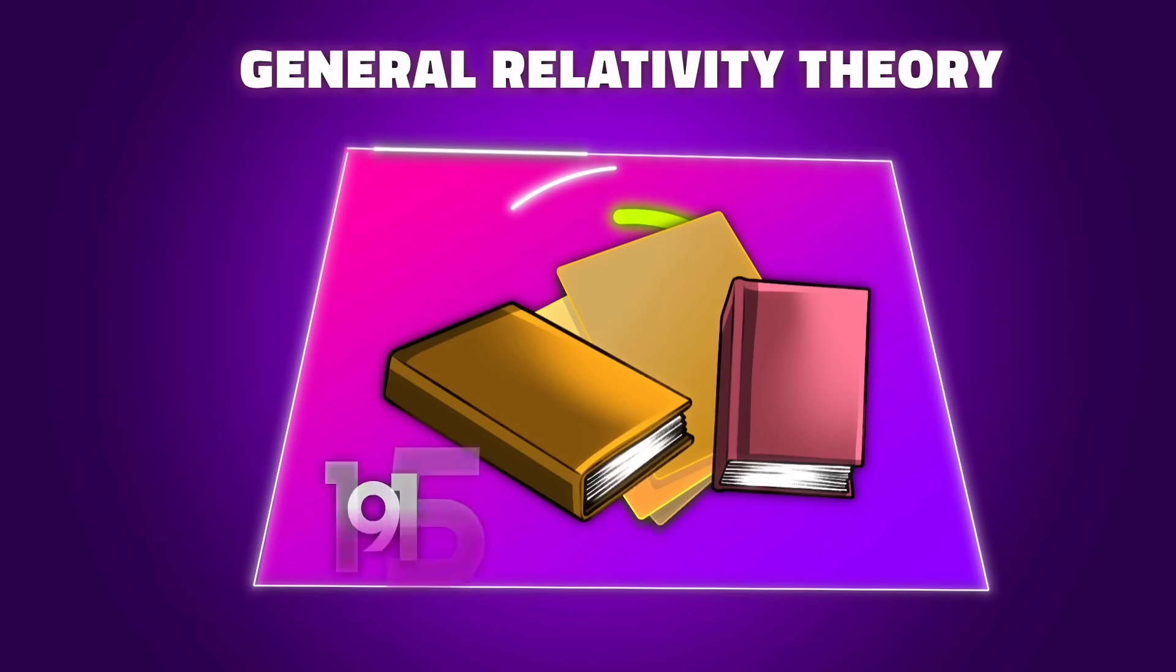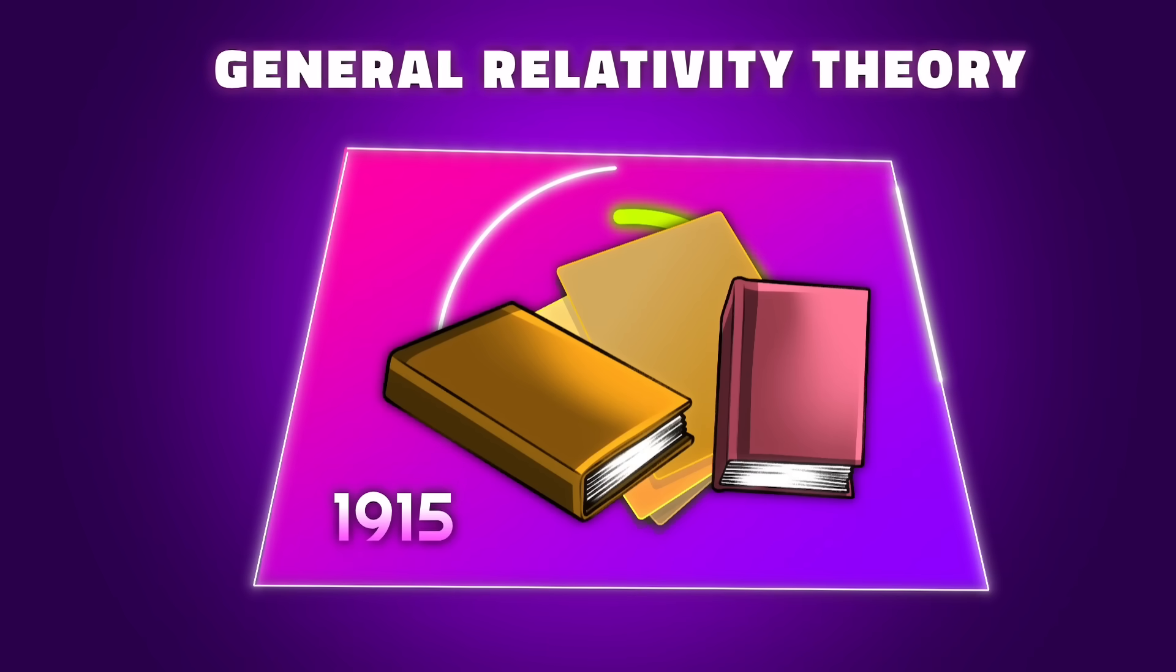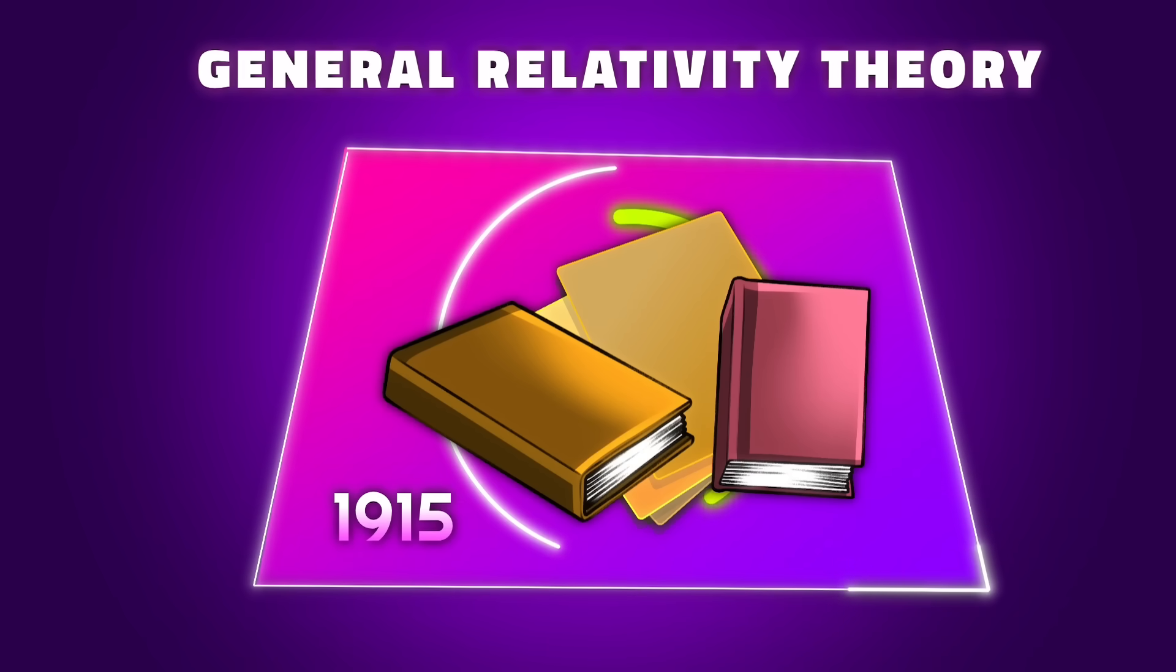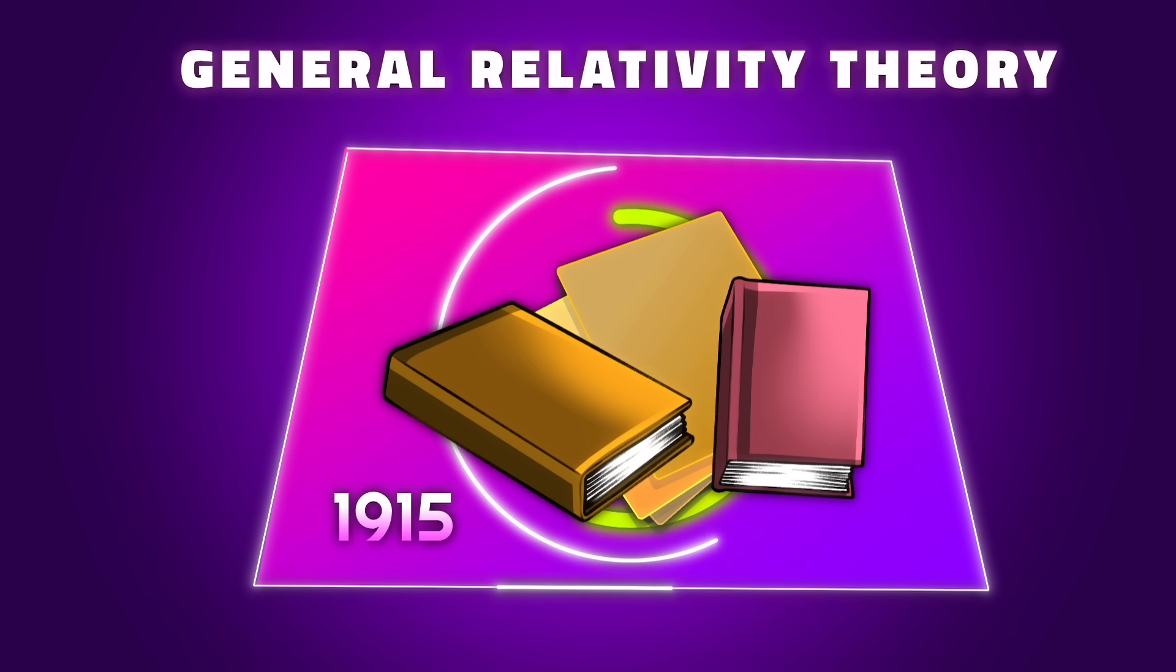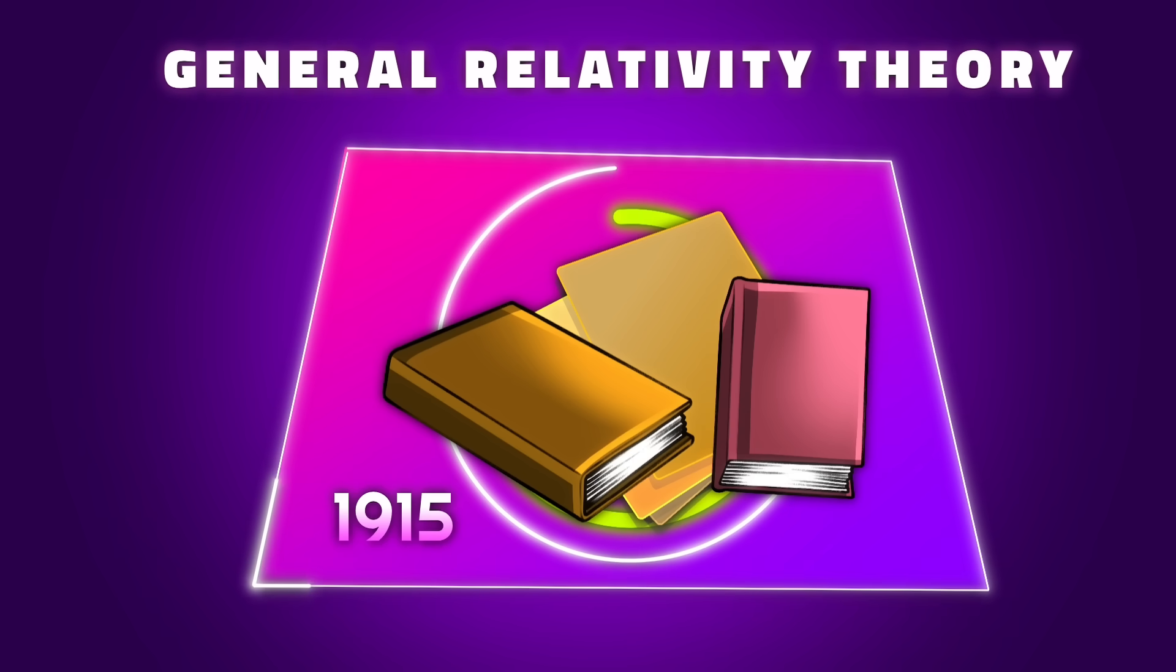In 1915, Einstein published his theory with equations. Everyone was confused when they saw this theory. What is this? What is he trying to say? No one understood it at the time.